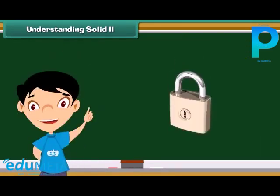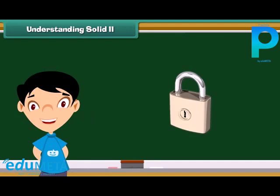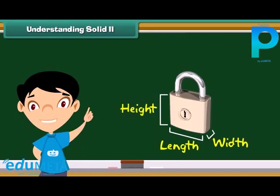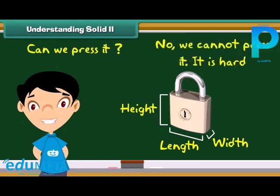Now see this lock. Is this a solid? You are correct. This lock is a solid. It has a fixed shape. It has length, width and height. And can we press it? No, we cannot press it. It is hard.